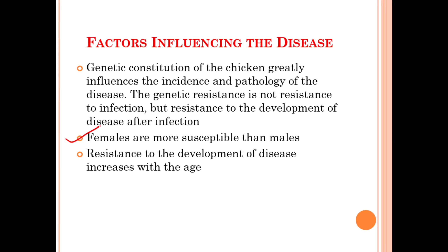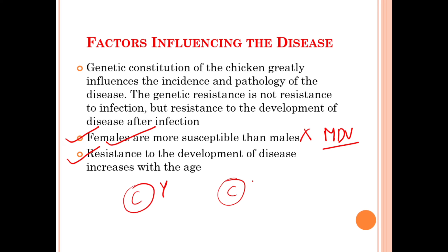The females are more susceptible than the males — the Marek's disease virus targets females more compared to males. Additionally, resistance to the development of the disease increases with age. In a young chicken compared to an adult chicken, if the Marek's disease infection occurs, it will more easily establish in the young bird, but it will be very difficult for the infection to set up in the adult chicken.